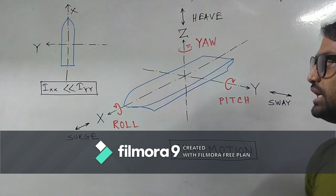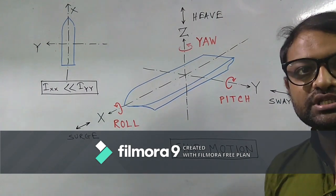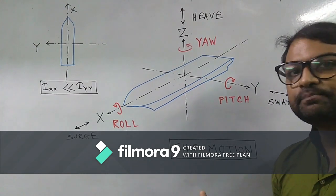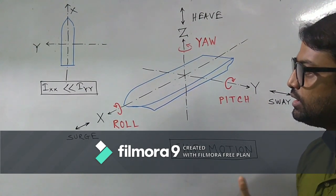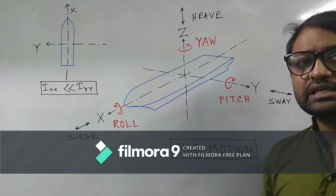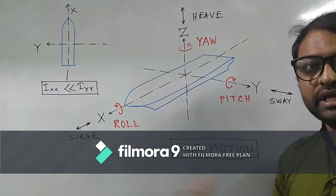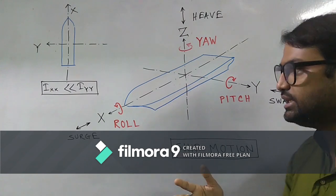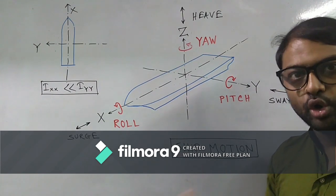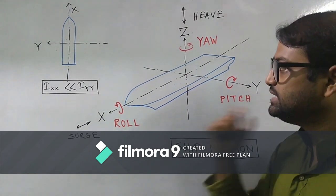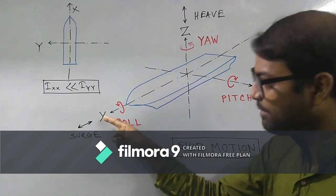So what about the rotational motions? We have three rotational motions. What are they? First of all, the most dangerous one, that is the roll.